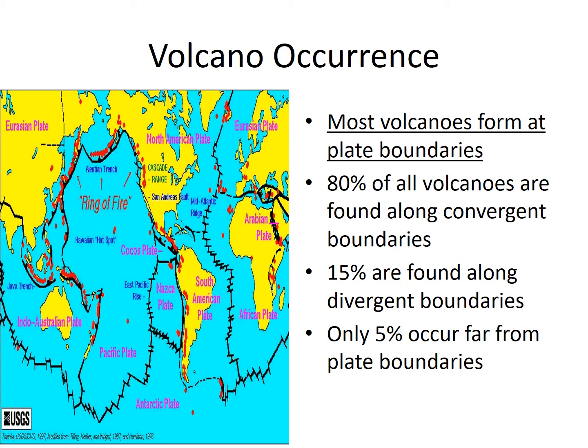Most volcanoes occur at plate boundaries. 80% of all volcanoes are found along convergent boundaries and 15% along divergent boundaries, with only 5% occurring far from plate boundaries. You can look back at the plate boundary lesson to see how plate boundaries result in volcanoes. We see a lot of volcanoes on what's called the Ring of Fire along the Pacific plate, but we still have hot spots as well.